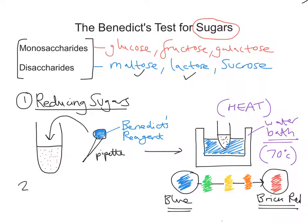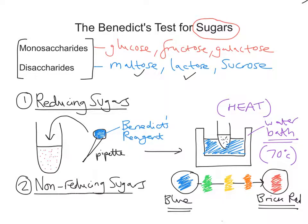Now let's look at the test for non-reducing sugars. This is incredibly similar. If you've tested for a reducing sugar and the result comes back negative — no coloured precipitate — you may still have a sugar present, but a non-reducing sugar. Sucrose is a good example of a non-reducing sugar. What we need to do is break the sucrose down into the monosaccharides that formed it first.